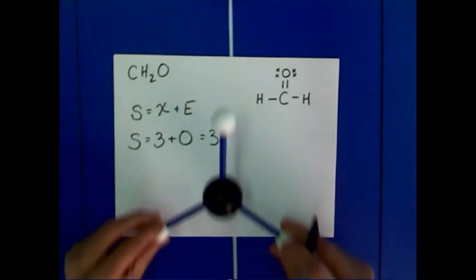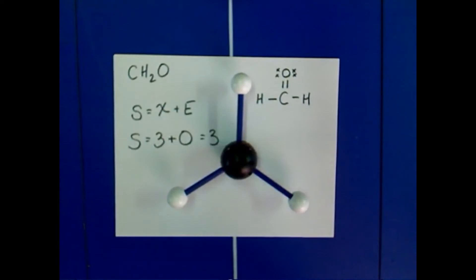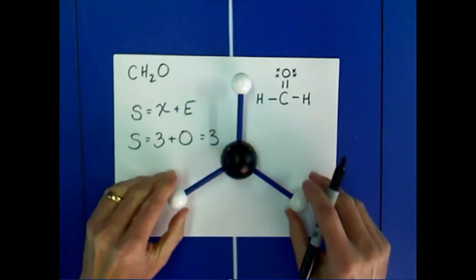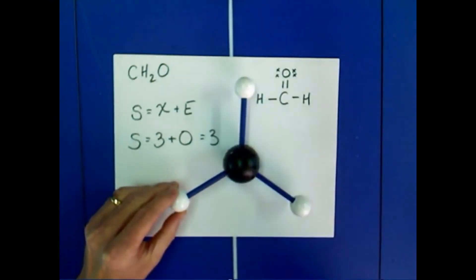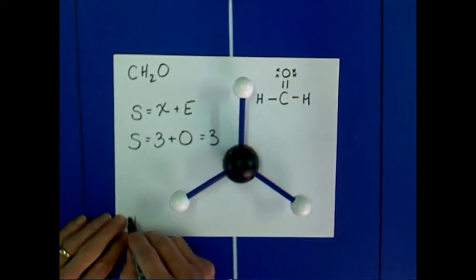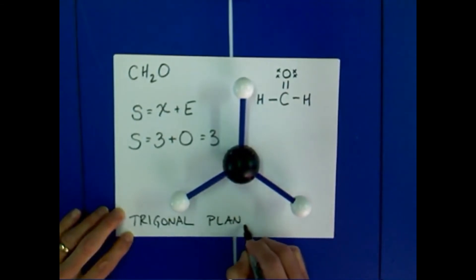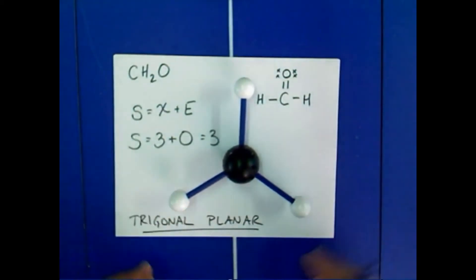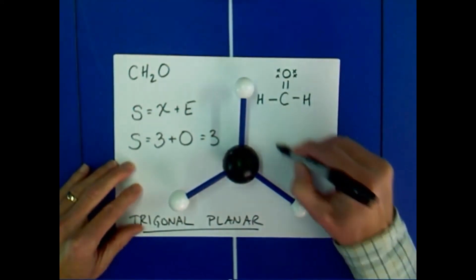With a steric number of 3 and all three atoms attached, you end up with a structure in which the atoms are oriented at 120 degrees from one another. All of those atoms lie in the same plane — at the corners of an equilateral triangle. This arrangement is called a trigonal or triangular planar arrangement. The described structure of this molecule is trigonal planar, with a bond angle of 120 degrees.